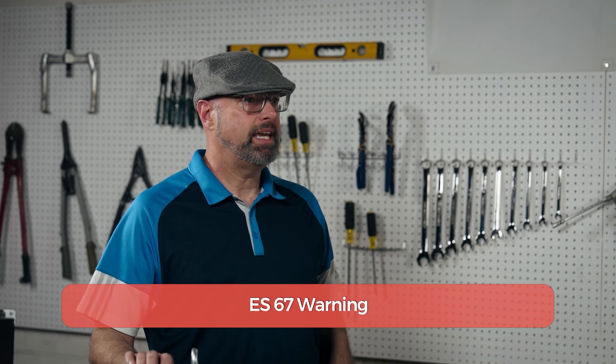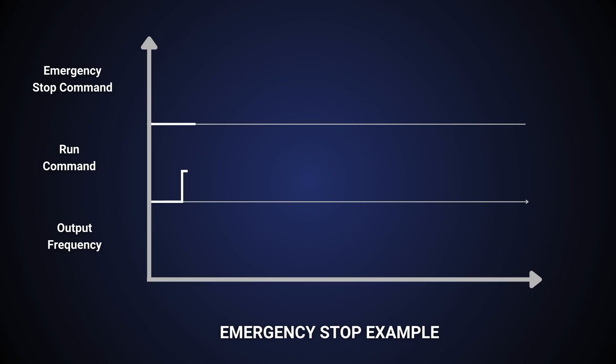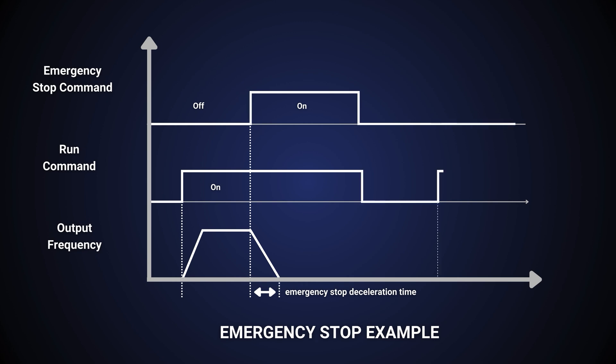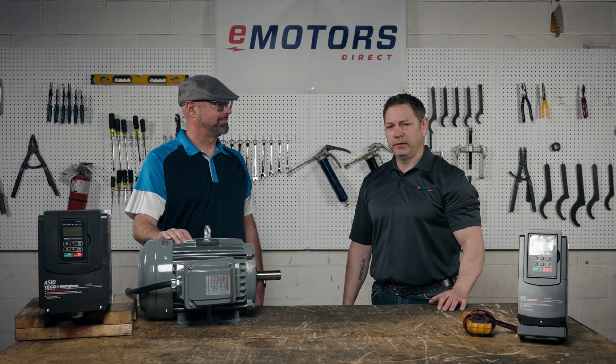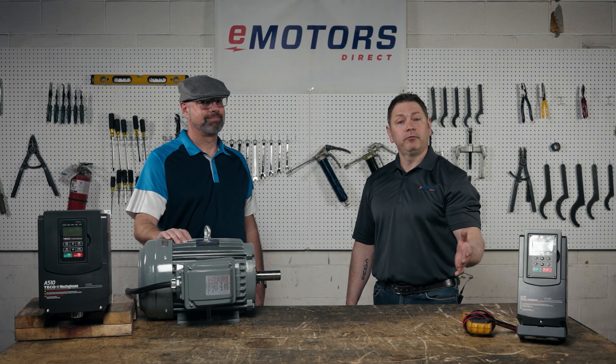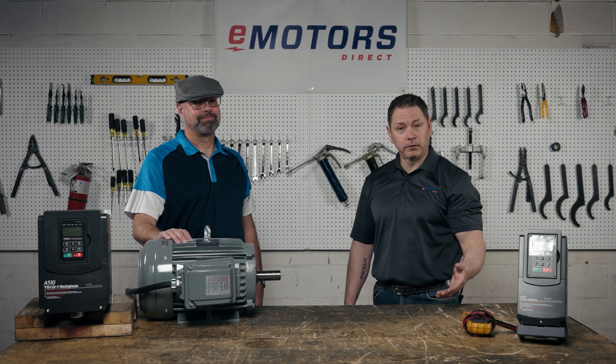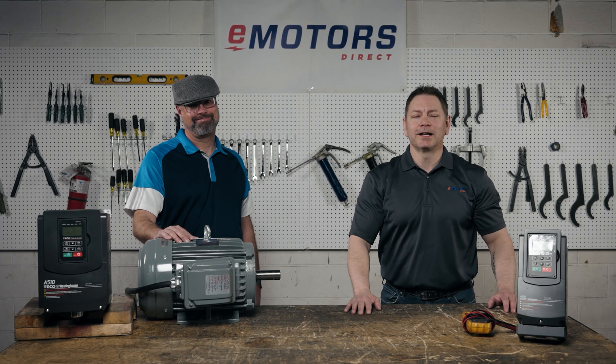Warning ES67: this message comes up when you have a digital input programmed with an emergency stop function and that digital input is currently active. Tony, thanks for coming to teach us VFD fault codes — I know this will be helpful for folks who are troubleshooting their VFD fault codes. For more information, refer to the TECO Westinghouse VFD manuals linked in the description. Check out our other TECO Westinghouse VFD videos on our YouTube channel. Thanks for tuning in, we'll see you next time.